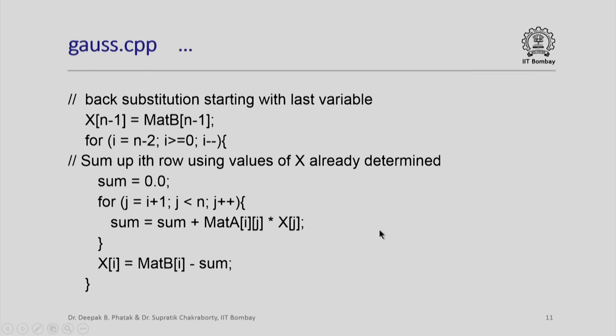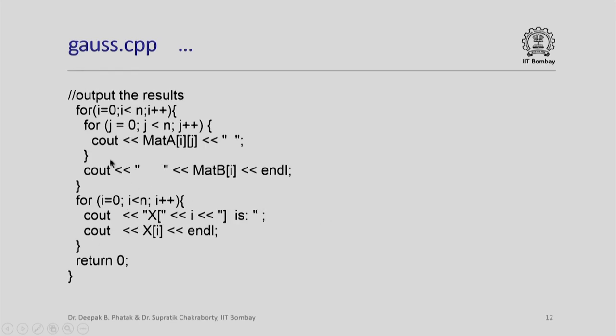This is a very simple elegant and neat looking solution. Some of you might have difficulty in understanding this in the first instance, but please read this program and also try to execute this program. We need to output the results. So, these are standard output statements. First, you output the matrix which is the upper triangular matrix and then you output the values of x.